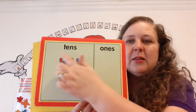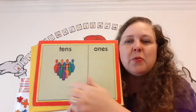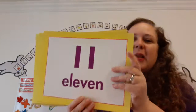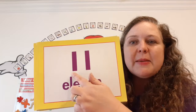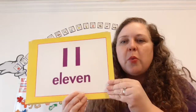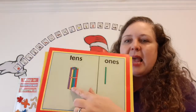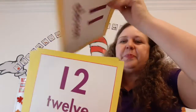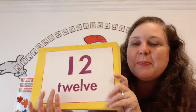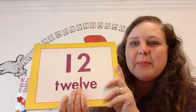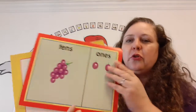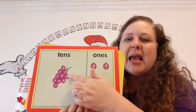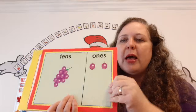One, ten — there it's ten, right there. One, ten. Eleven. Eleven is part of the teen family because it begins with a one. Ten, eleven. Twelve is part of the teen family because it begins with a one. Twelve — grapes. Ten, eleven, twelve.